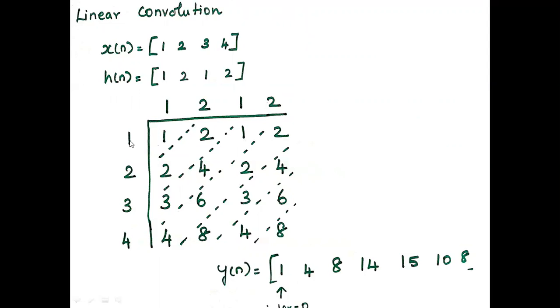Take the first input 1, multiply with 1 to get 1, 2, 1, 2. Take the second input 2, multiply with 1 to get 2, then 2 into 2 is 4. The same procedure we have to follow and then perform the addition diagonally.